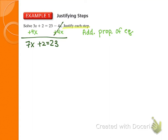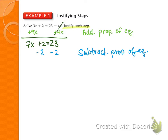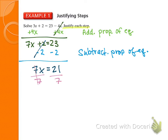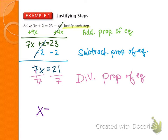My next step: subtract 2 on both sides — subtraction property of equality, or 'subtract prop of EQ.' Note: don't just write 'sub' because there's also a substitution property. Then we have 7x equals 21. Last step: divide by 7 on both sides — division property of equality, 'div prop of equality.' Our final answer: x equals 3.